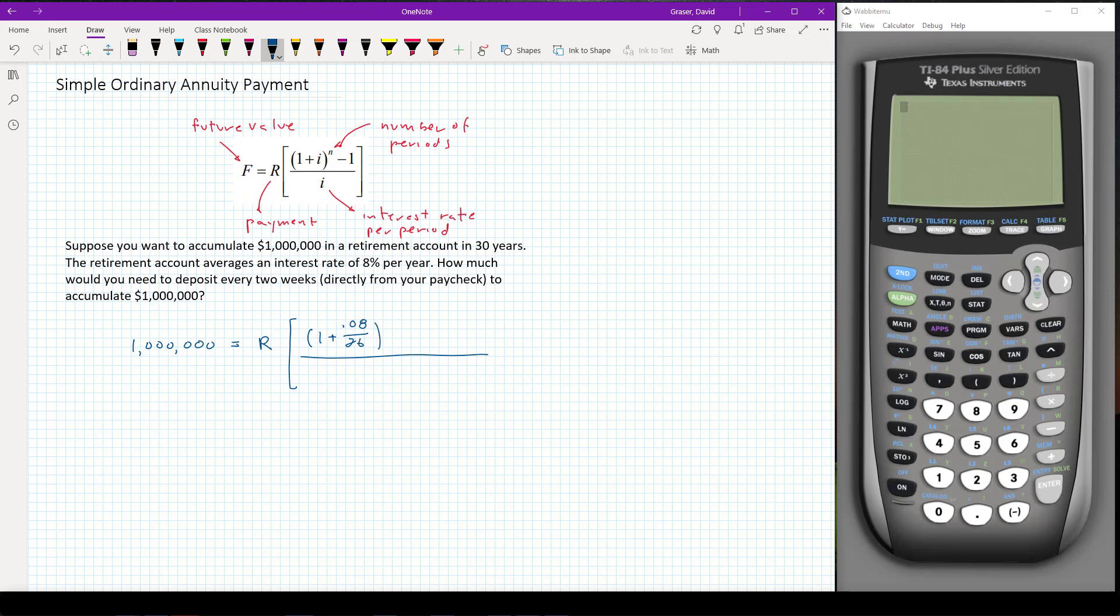And then I need to go for 30 years. So 30 years, 26 times a year. So 30 times 26. That means I'm going to have 780 periods, minus 1. And now on the bottom, we'll put 0.08 divided by 26.